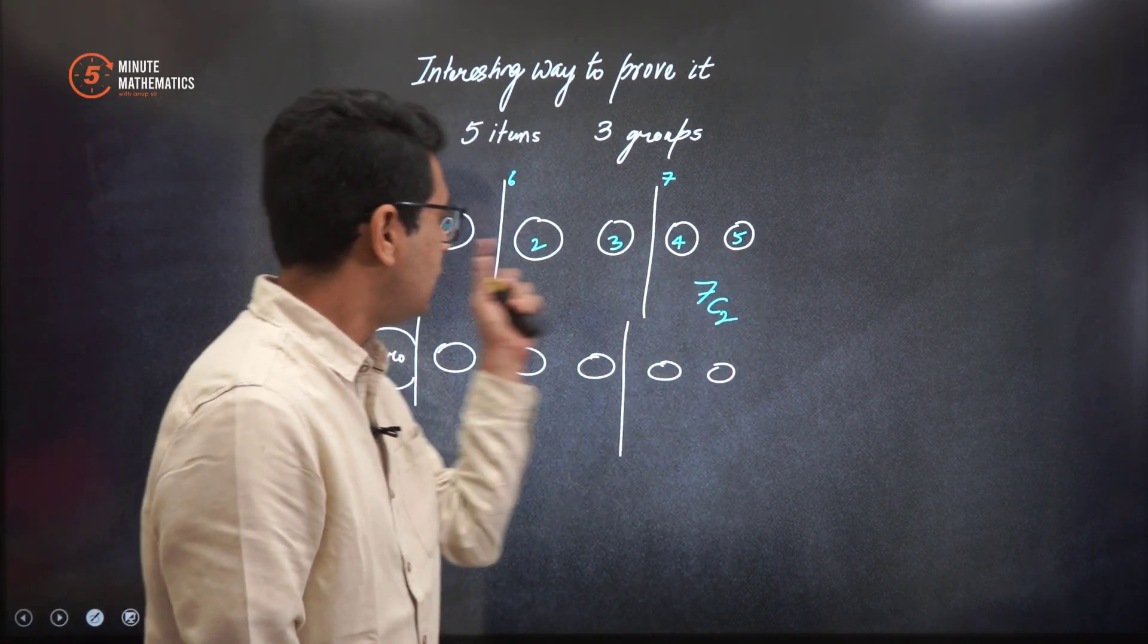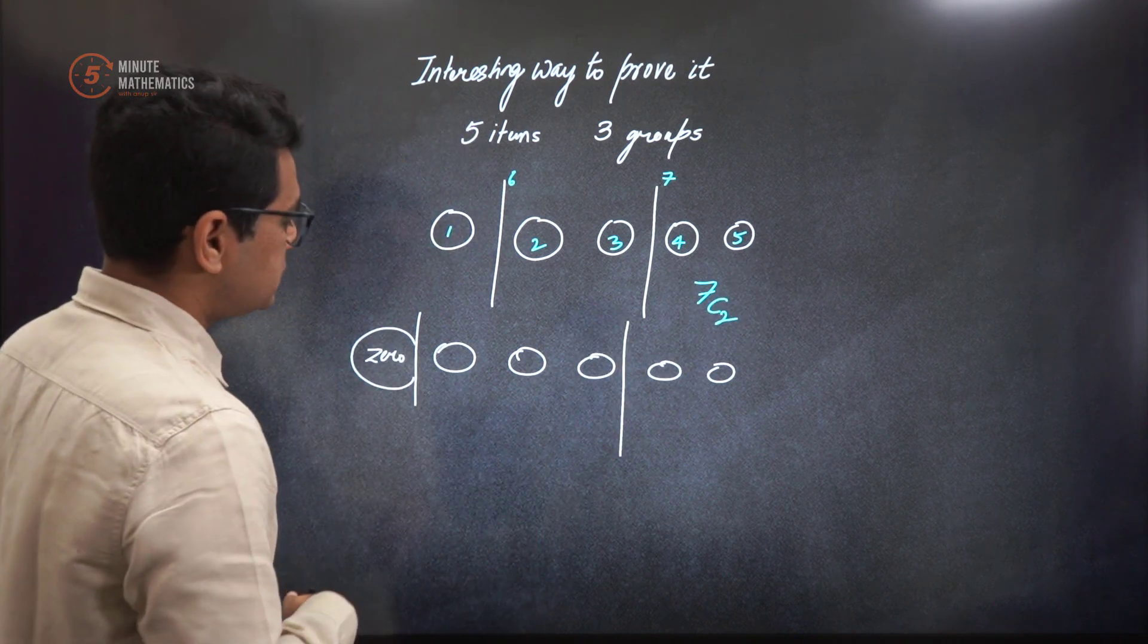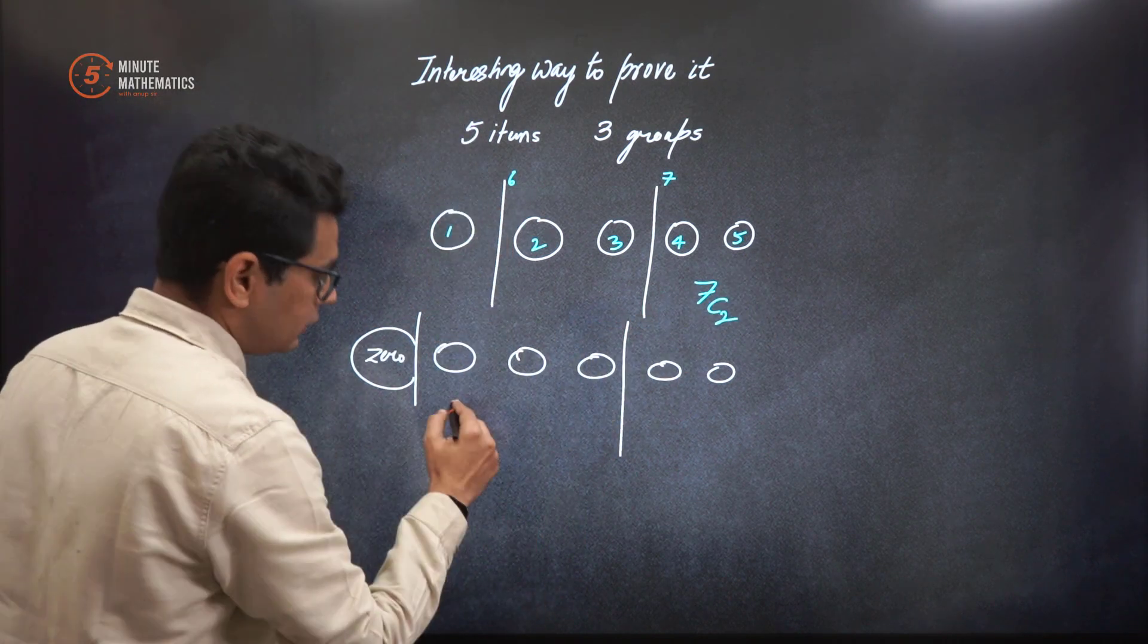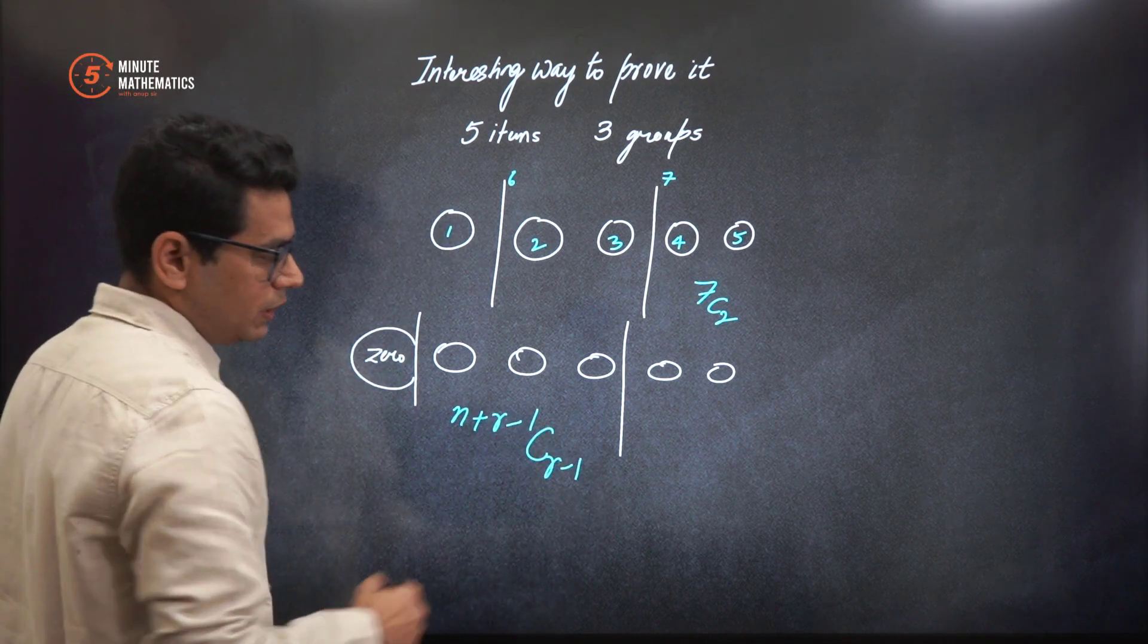And those 7 slots, aapko kitne slots chahiye? Koi se bhi 2 slots, jaha par ye place kara jayega. So if you convert this, the formula was N plus R minus 1, C, R minus 1.